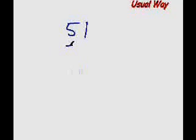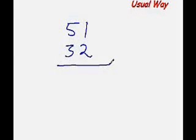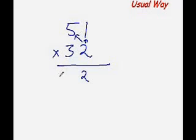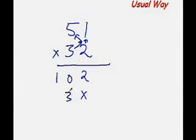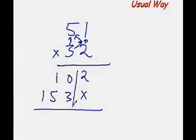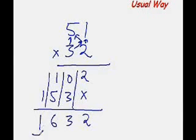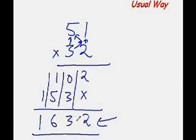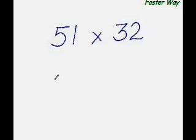The usual way of multiplying any two-digit number with any other two-digit number: 2 times 1 is 2, 2 times 5 is 10, then 3 times 1 is 3, and 3 times 5 is 15. Now add all the numbers in the column — 2, 3, 6, 1 — giving the answer 1632.